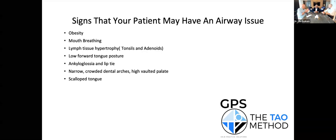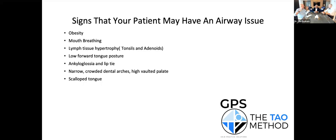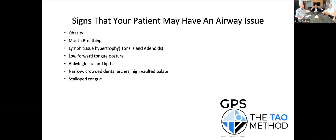Tongue tie, lip tie. The narrow, crowded dental arches, the high-vaulted palate — the roof of your mouth is the floor of your nose. A high-vaulted palate encroaches on your nose, causing frequent sinus infections, colds, runny noses. That's why we talk about early orthodontic intervention with expansion — no matter which approach you're using, we're always talking about expansion. If you see a narrow palate, Scott talks about narrow palate syndrome. In the past we'd put on veneers — but you're masking the problem.